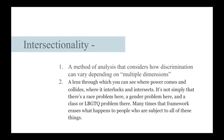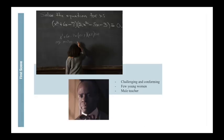It's not simply that there's a race problem here, a gender problem here, and a class or LGBTQ problem there, but many times that framework erases what happens to people who are subject to all of these things. Hidden Figures has many examples of racism and sexism. The very first scene shows Catherine explaining her work on a chalkboard in front of a class of nearly all black men. This scene both conforms and challenges stereotypes.